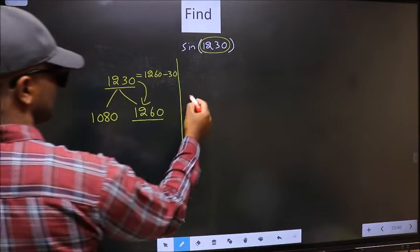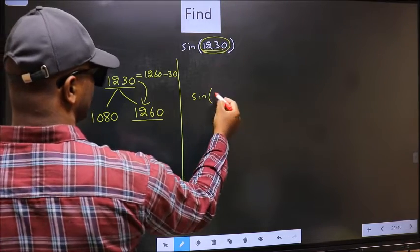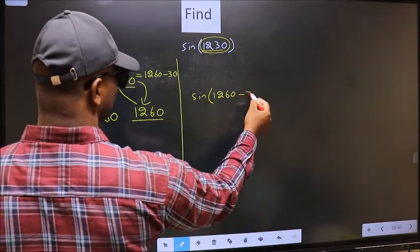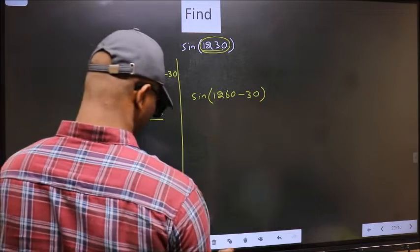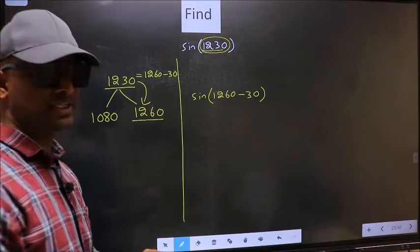So this will become sin. In place of 1230 now we write 1260 minus 30. This is your first step.